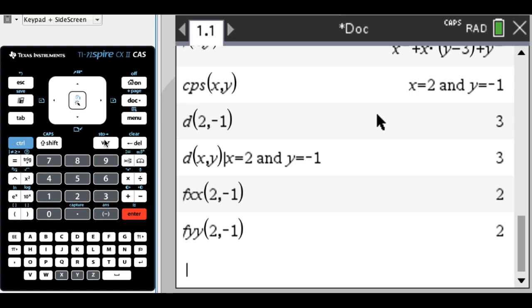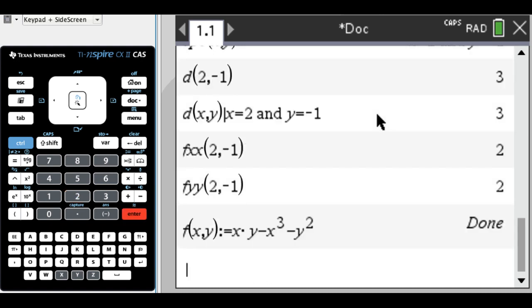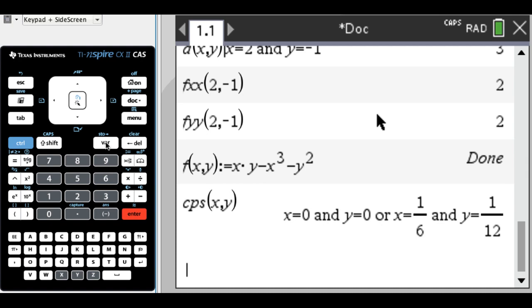Okay, so that'll work for us, and now we can go through and we can just change it. So f of x, y is, let's say, x times y minus x cubed minus y squared, I guess. All right, so again, I want to find the critical points of x, y, so there's two of them.